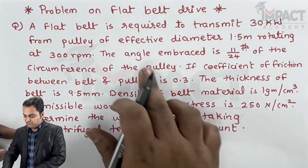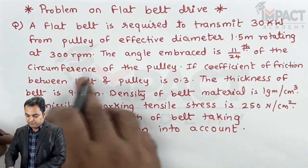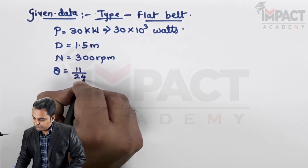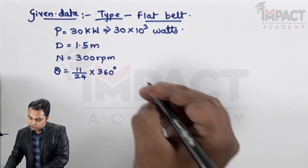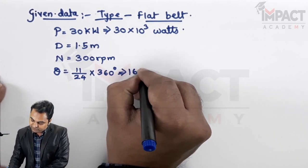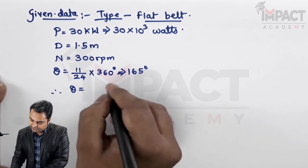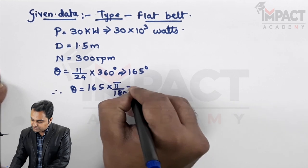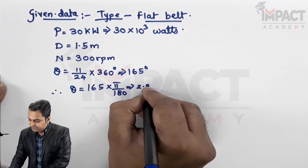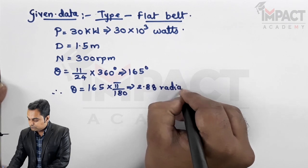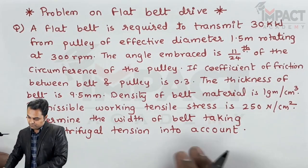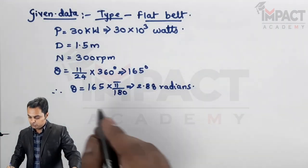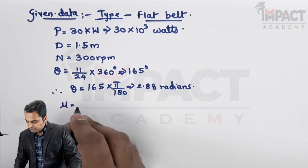The angle of contact or embrace is 11/24th of the circumference of the pulley, which is 11/24th of 360 degrees, giving 165 degrees. Converting to radians: 165 multiplied by pi divided by 180 gives 2.88 radians. The coefficient of friction mu is 0.3.